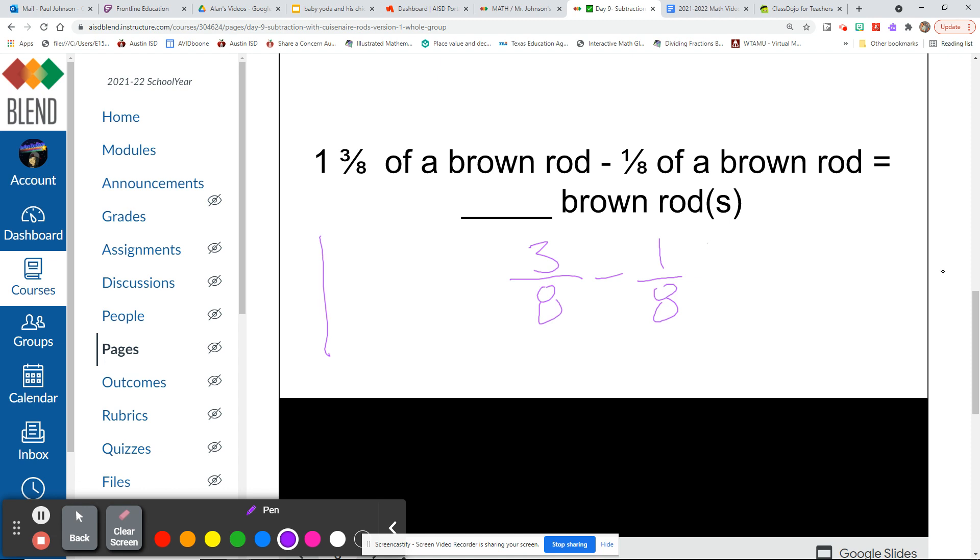Alright, so three minus one is two. So we have two-eighths, but oh, they're both even. So we know that if our numerator is even and our denominator is even, it has to be simplified. So divide by two, and we get one-fourth. Okay, that looks good. So let's bring that one-fourth back over here.